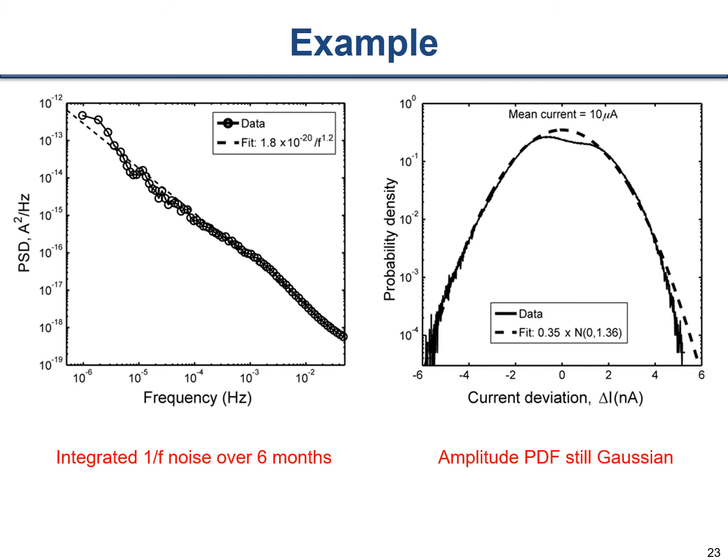Real measurement data from the Sarpashkar text shows a device turned on for six months, revealing a very clear 1/f shape — actually 1/f^1.2 — in the noise power spectral density. It just keeps going if you measure for longer and longer periods. Importantly though, the probability density function — the PDF — underlying this 1/f noise is still Gaussian. This is still a Gaussian random variable.